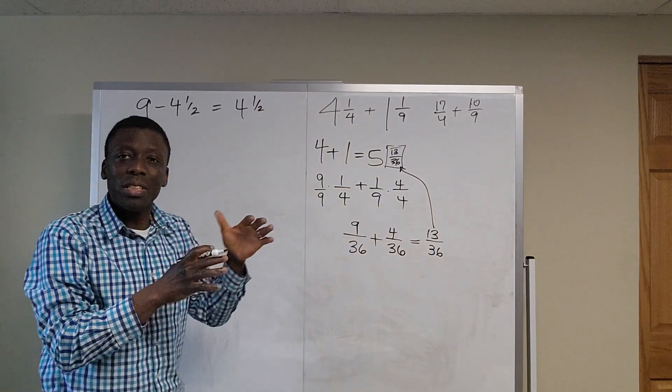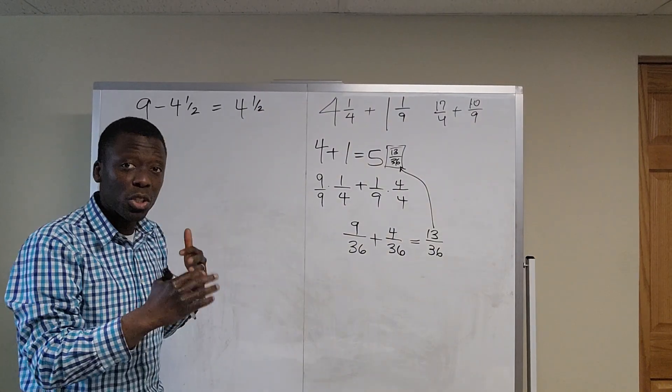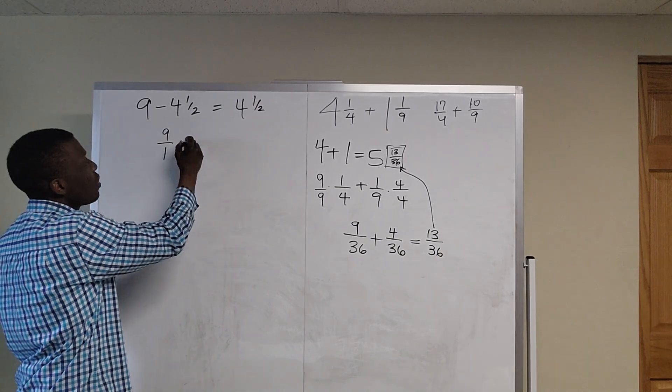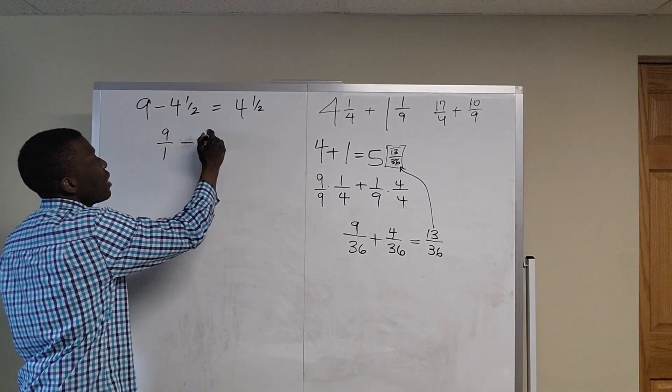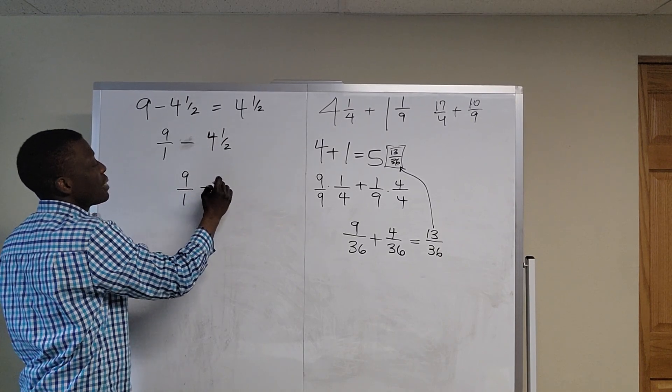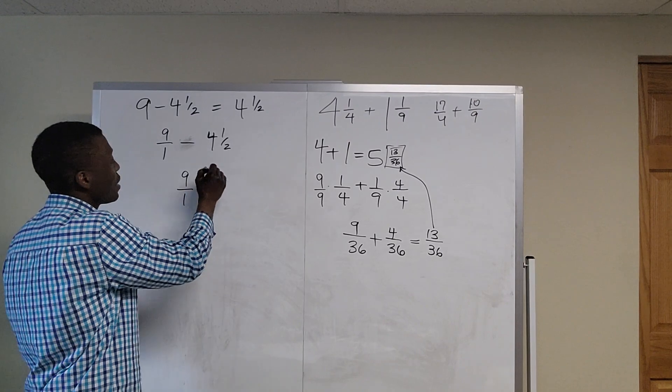But what if you want to take a systematic approach to do this problem and you don't know how? Well, what you could do is write this as 9 over 1 minus 4 and a half, which is 9 over 1 minus—2 times 4 is 8 plus 1 is 9—9 over 2.